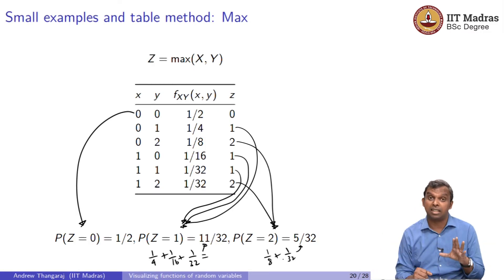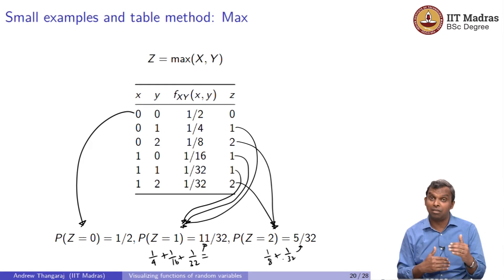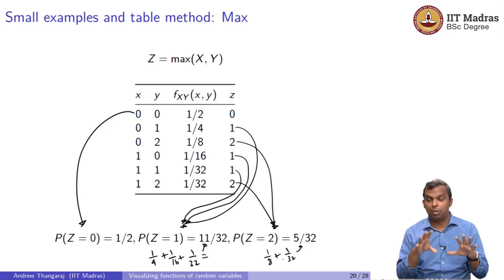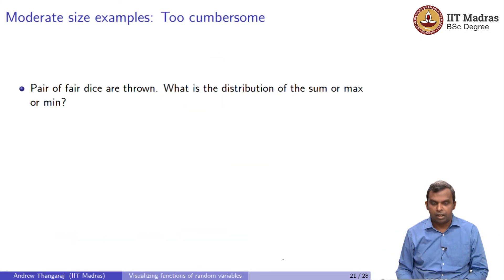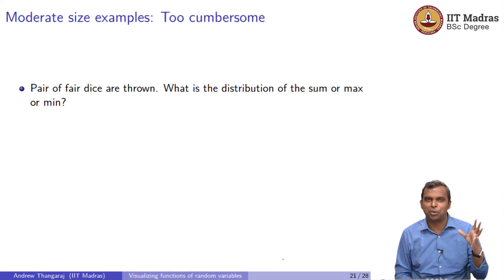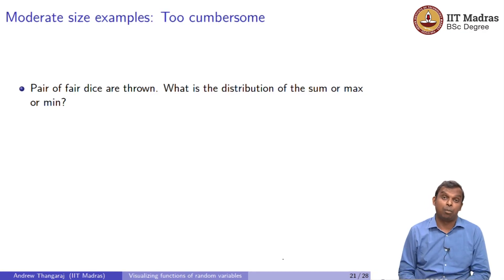For small-sized examples, even if you have a function of several random variables, you only have to worry about non-zero probabilities of X and Y. If X and Y take non-zero probability over a small set of values, go back to the table method — it will simplify everything. But notice what is going to happen with moderate-size examples, like problems in quizzes. The table method becomes very cumbersome very quickly.